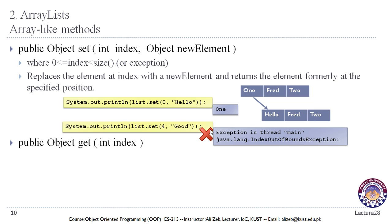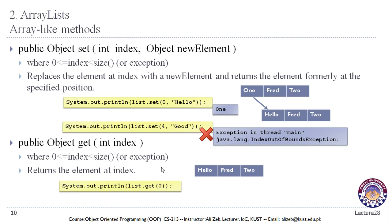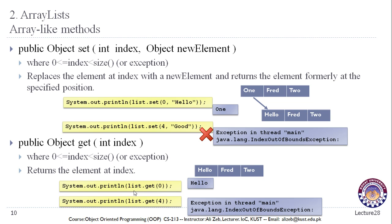The public Object get method takes an index position that should be greater than or equal to zero and less than the size of the ArrayList, otherwise an exception is thrown. It returns the element at that index position. For example, getting the first element from the ArrayList returns that element. Trying to access an element not in the ArrayList will result in an exception.